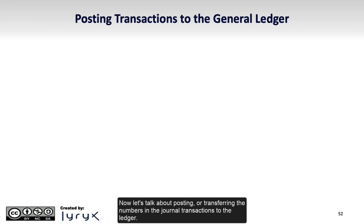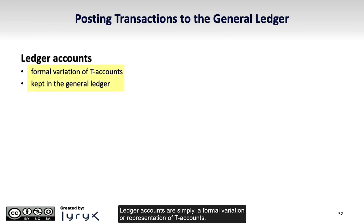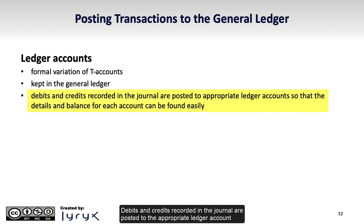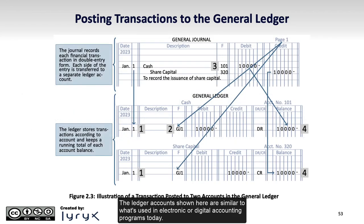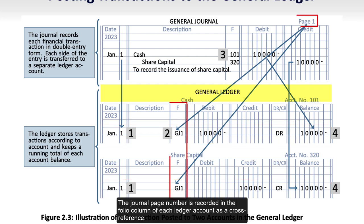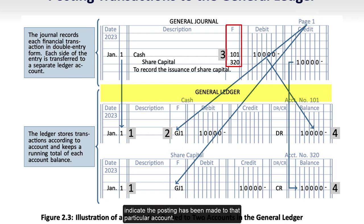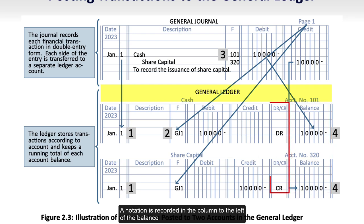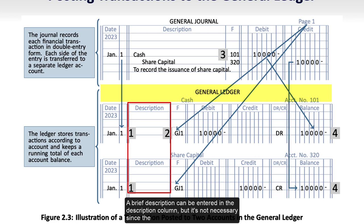Now let's talk about posting, or transferring the numbers in the journal transactions to the ledger. Ledger accounts are simply a formal variation or representation of T-accounts. Debits and credits recorded in the journal are posted to the appropriate ledger account so that the details and balance for each account can be easily determined. The ledger accounts shown here are similar to what's used in electronic or digital accounting programs today. The date and amount are posted to the appropriate ledger account. The journal page number is recorded in the folio column of each ledger account as a cross-reference. The appropriate ledger account number is recorded in the folio column of the journal to indicate the posting has been made to that particular account. After posting the entry, a balance is calculated in the balance column, with a notation indicating whether it is a debit or credit. A brief description can be entered in the description column, but it's not necessary since the journal includes a detailed description for each entry.